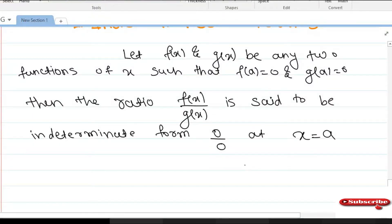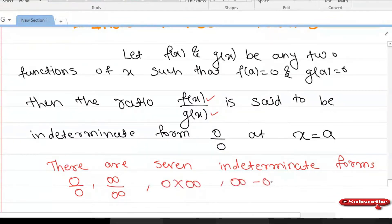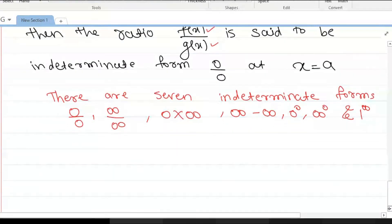When the numerator and denominator are both 0, it is called an indeterminate form. There are seven indeterminate forms: 0/0, infinity/infinity, 0 times infinity, infinity minus infinity, 0 raised to 0, infinity raised to 0, and 1 raised to infinity.